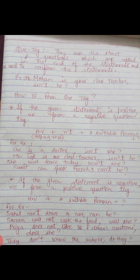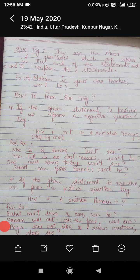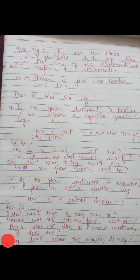'Sonam will not cook the food' — whether you are given 'will not' or 'won't', we use 'will', so the tag is 'will she?' Similarly, 'Priya does not like to draw cartoons' — the helping verb is 'does', so the tag is 'does she?' This is how we form question tags.